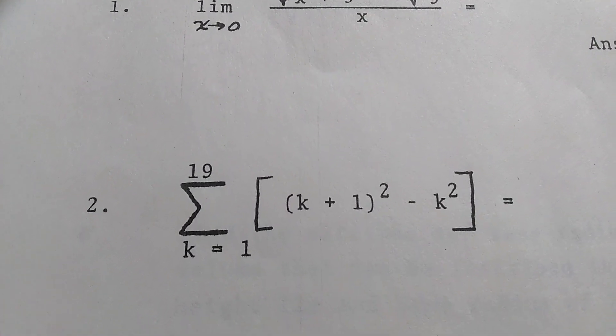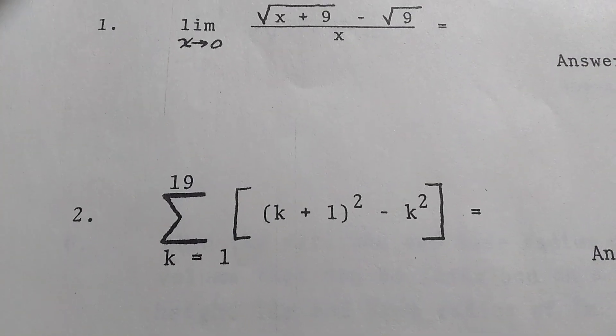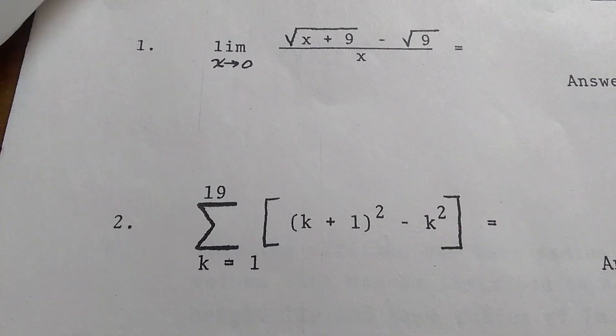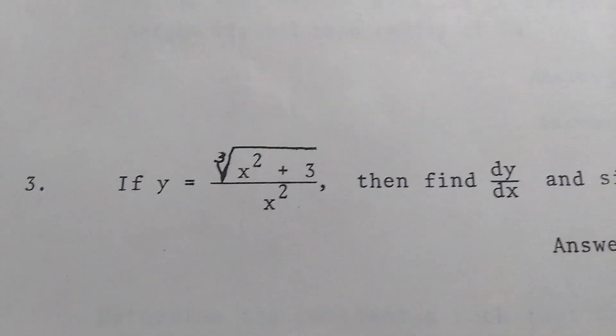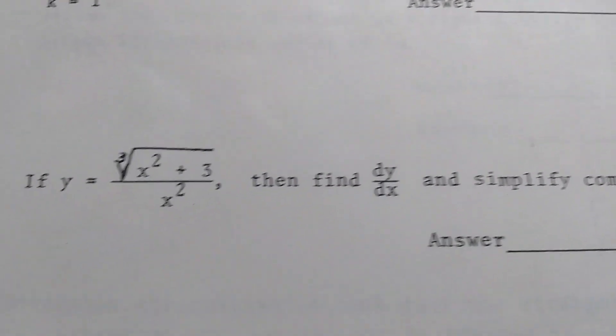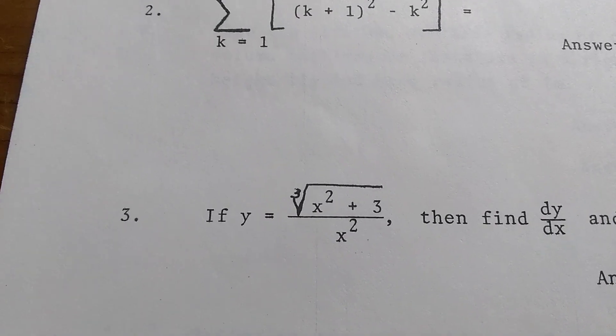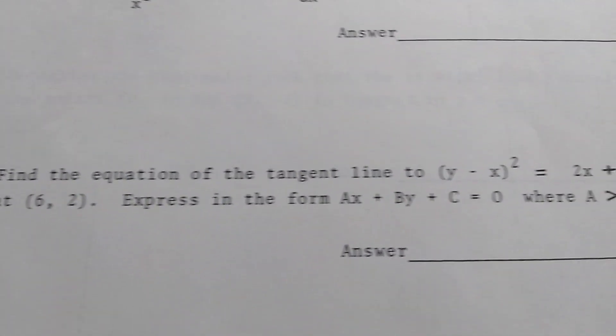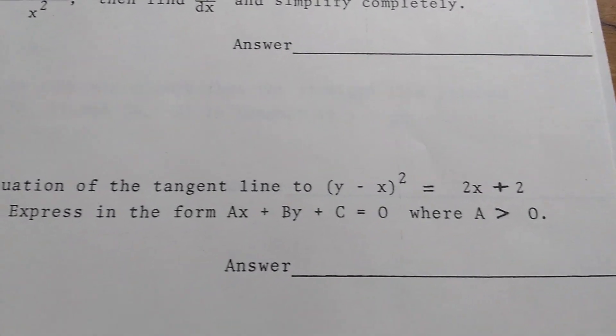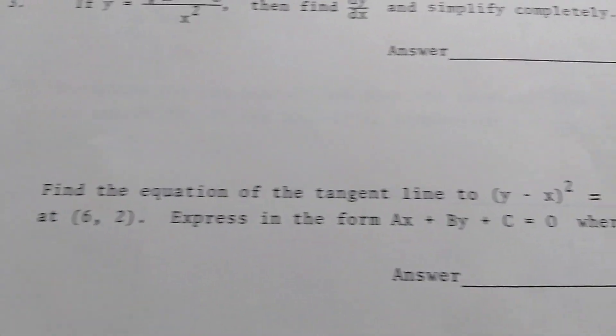This is a little bit different. We have a finite sum. So I guess they want us to use properties of sums to work this out. Here we have a function and again finding the derivative. Again just nothing really special. Here we have the equation of a tangent line. And we probably have to use implicit differentiation to do this one.